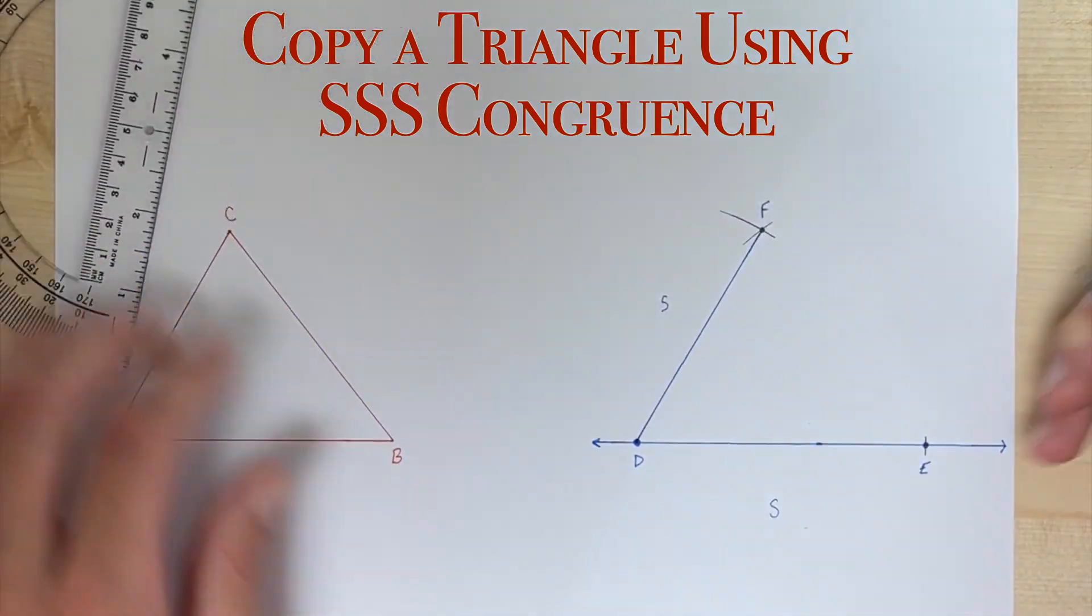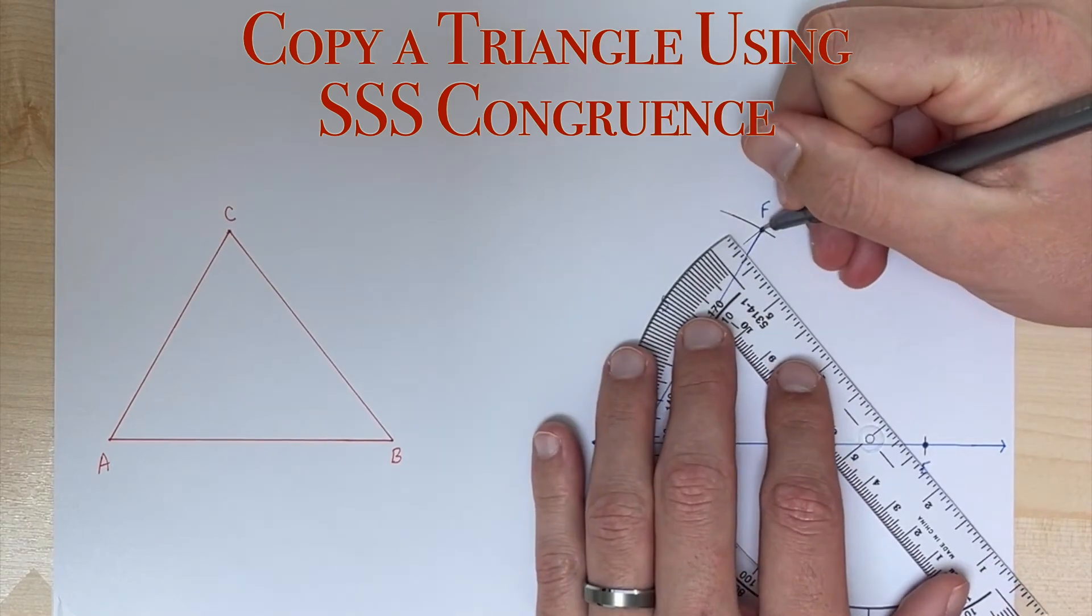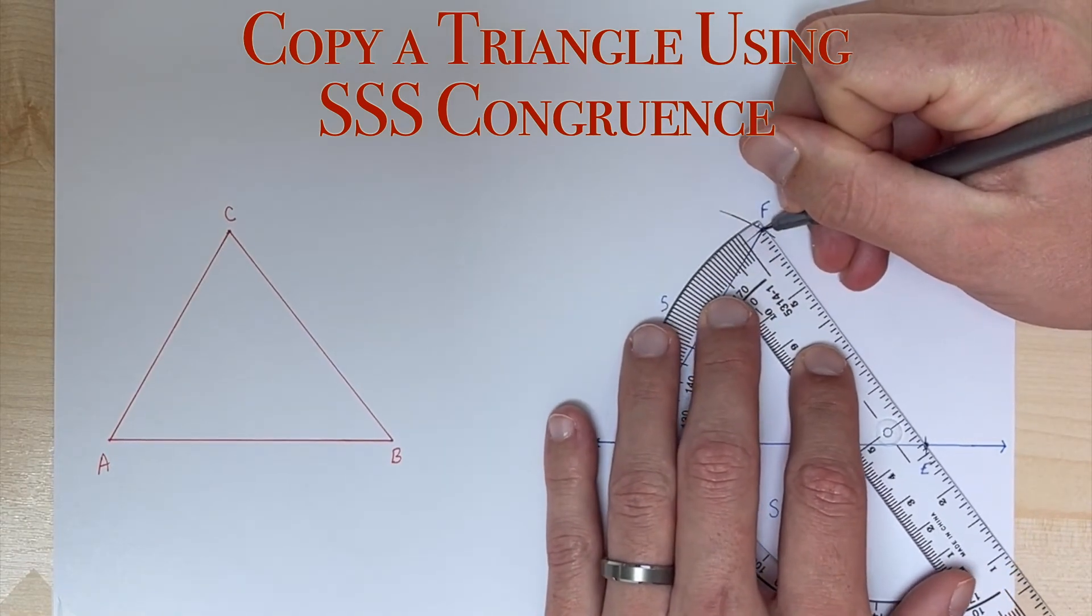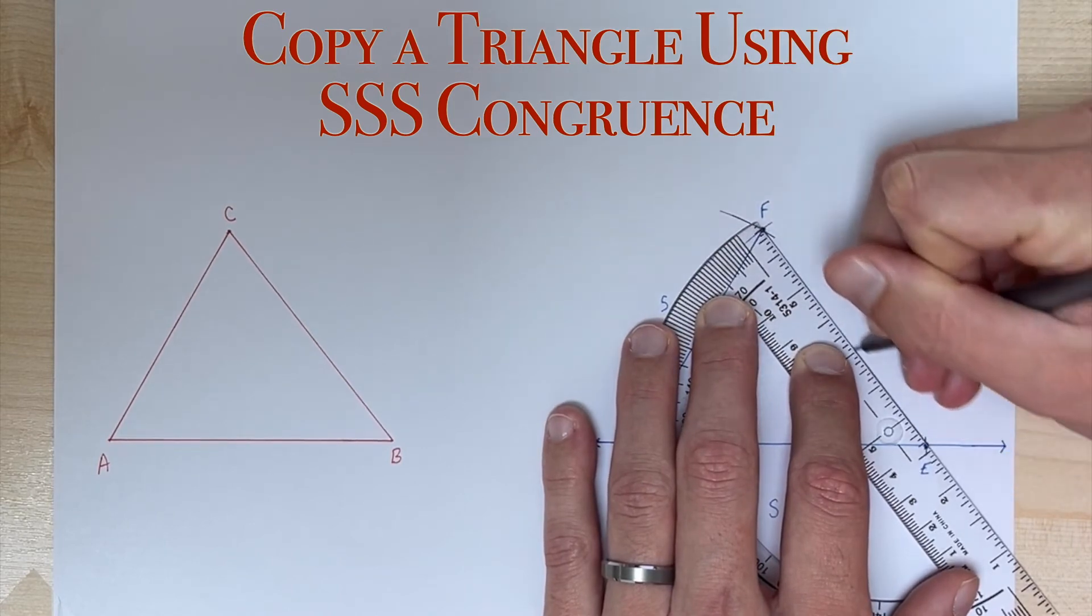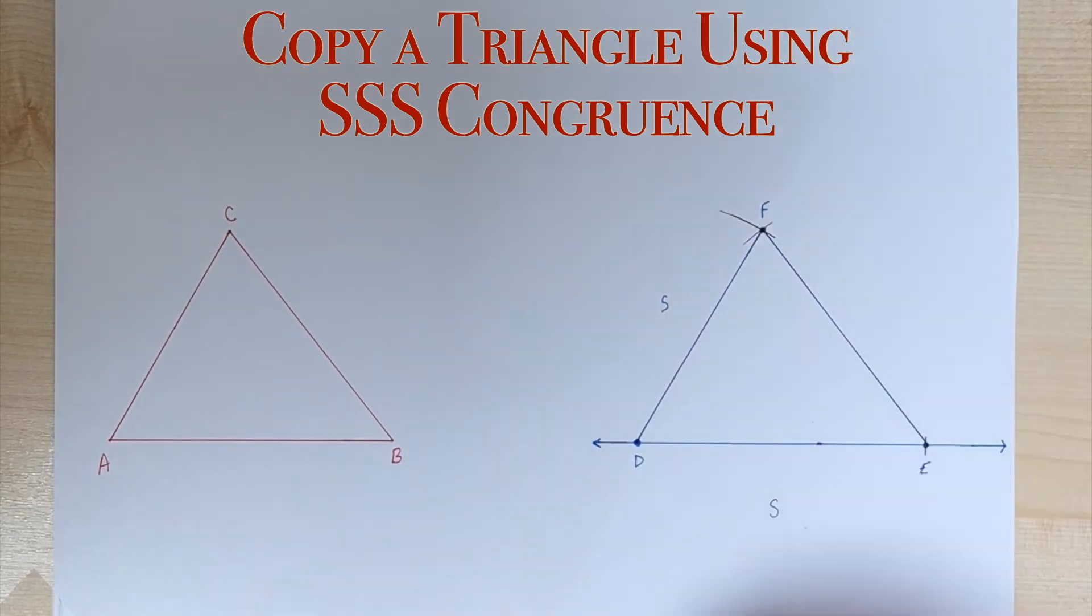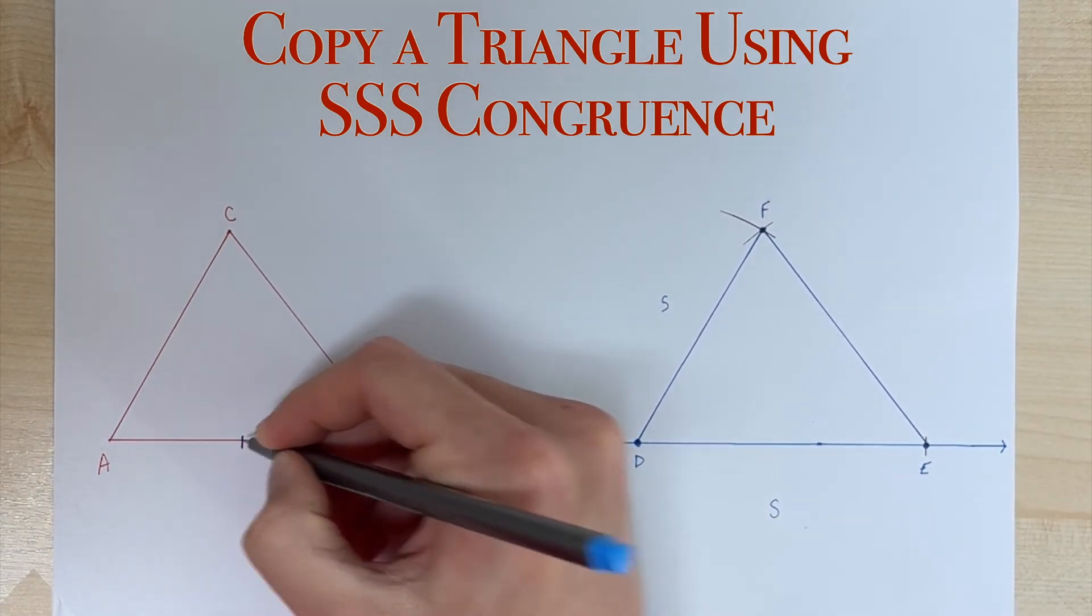And the last side is from F to E, or side EF. Draw our side there and now we can put our congruent marks here, so we know side AB is congruent to side DE.